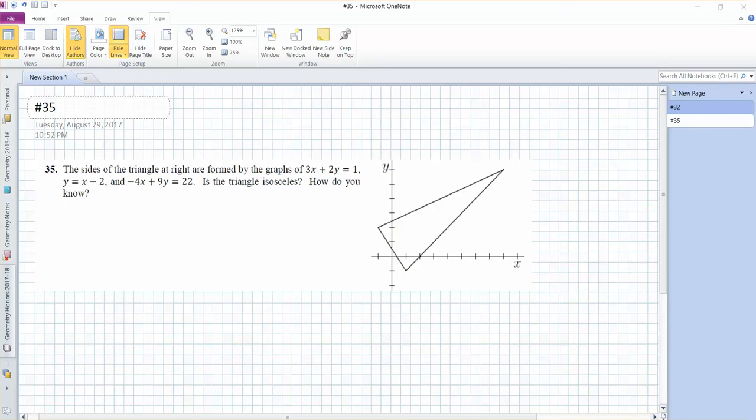All right, so in this video we're going to look at number 35. So we've got this triangle here, and it tells you what lines form them, and it asks if the triangle is isosceles.